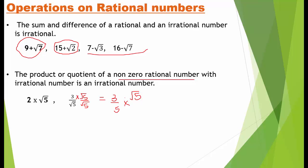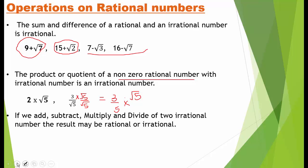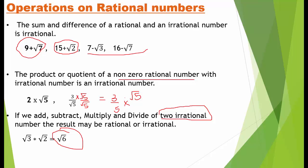We have learned two operations: first, sum or difference; second, product or quotient of a non-zero rational number with an irrational number. The third operation: if we add, subtract, multiply, or divide two irrational numbers, the result may be rational or irrational, depending on the numbers. For example, root 3 into root 2 equals root 6, which is irrational. But root 3 into root 3 equals root 9 equals 3, which is rational.